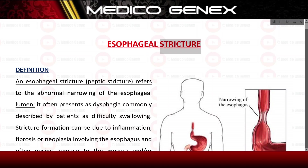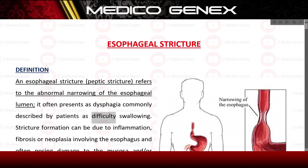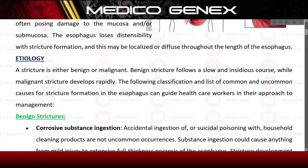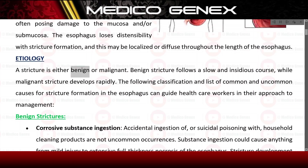An esophageal stricture, also called a peptic stricture, refers to the abnormal narrowing of the esophageal lumen. It often presents as dysphagia, commonly described by patients as difficulty swallowing. Stricture formation can be due to inflammation, fibrosis, or neoplasia involving the esophagus, often posing damage to the mucosa and/or submucosa. The esophagus loses distensibility with stricture formation, and this may be localized or diffuse throughout the length of the esophagus.